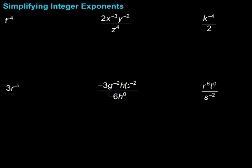In this video, we're going to take a look at simplifying integer exponents. There are a couple special ones we need to look at first. The first one is that if we have something to the zero power — let's say x to the zero power — that is going to be equal to 1, because any non-zero number raised to the zero power is going to be equal to 1, and that's by definition.